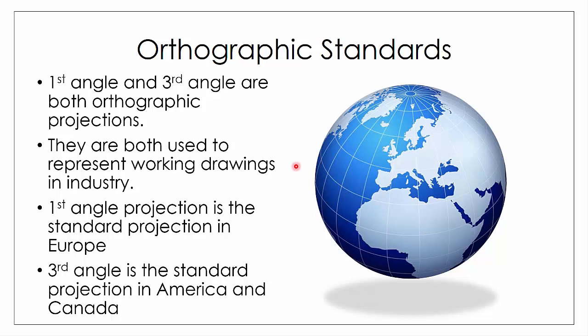For example, the standard projection system in Russia is first angle, whereas in Japan third angle is the standard. In fact, if you were in Great Britain you could be using either — both first and third angle are standard in Britain.